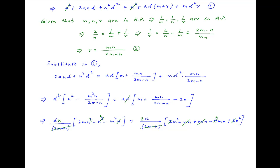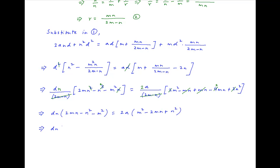Taking 2 common outside the bracket amongst the remaining terms on the right-hand side, the equation simplifies to dn times (2mn minus n squared minus m squared) equal to 2a times (m squared minus 2mn plus n squared). This can be written as dn times minus(m minus n) squared equal to 2a times (m minus n) squared. Therefore, (m minus n) squared cancels out, and d/a — the ratio of the common difference to the first term — equals minus 2 upon n, which is the required answer.